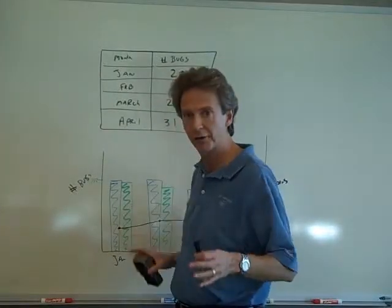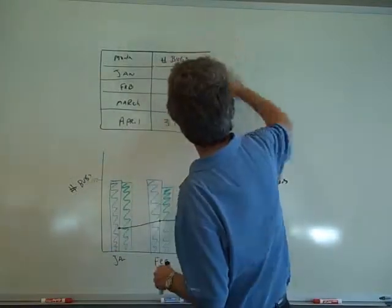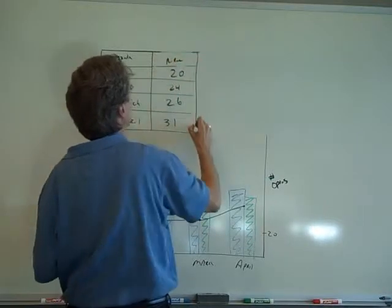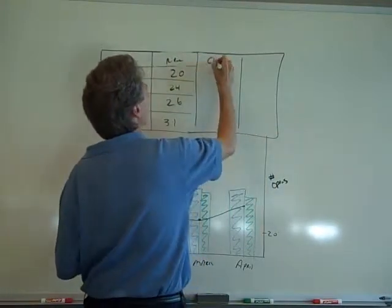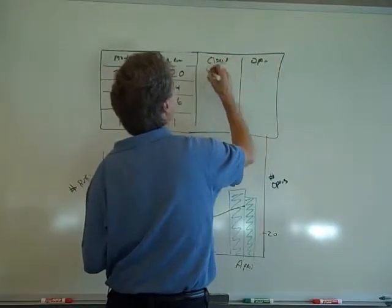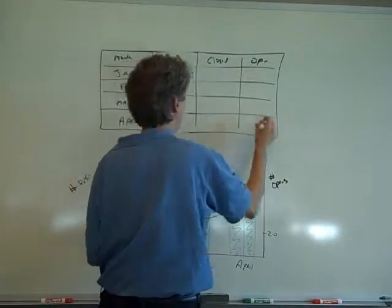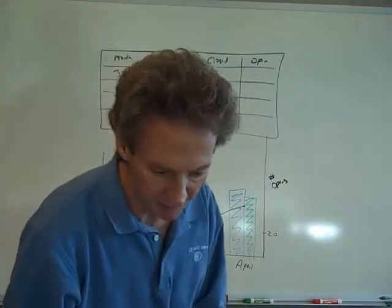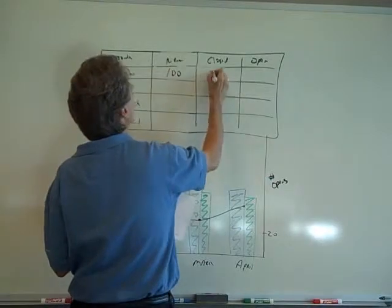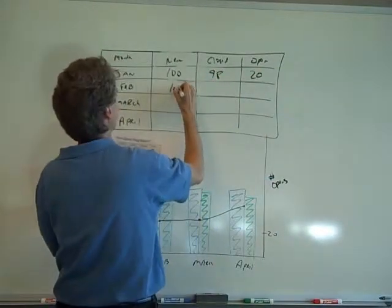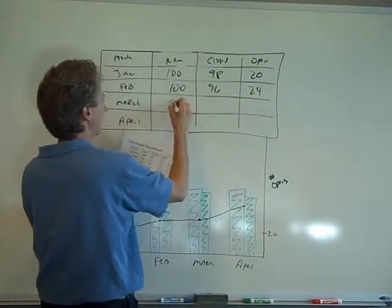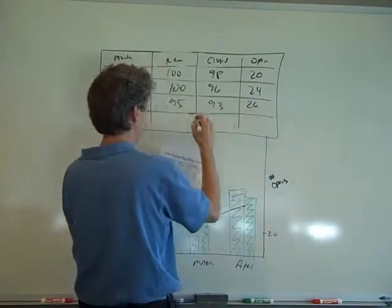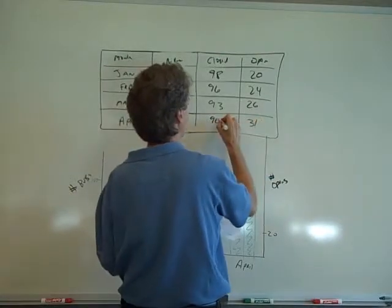Okay. So first of all the table should display all three metrics, the I, the N, and the O. You have the number of new, the number of closed, and the number of open at the end of the month. In this case, the numbers were actually 100, 98, 20, then 96, 24. What the team was displaying was the number of open bugs at the end of the month: 93, 90, 31.